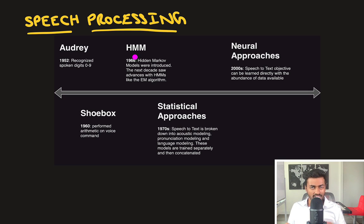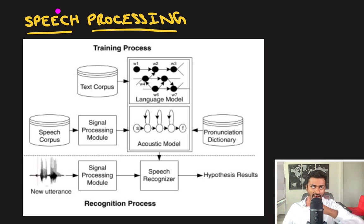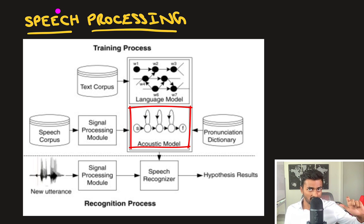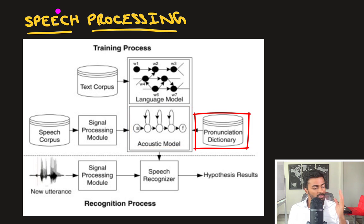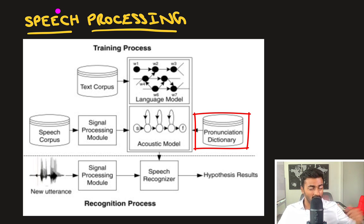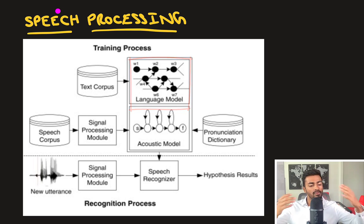For statistical approaches to speech processing, similar to the machine translation case, we would break down the complex problem into three parts: acoustic modeling, pronunciation modeling, and language modeling. Given a raw speech wave, we would first chunk it up. We'd train an acoustic model to generate and recognize different phonemes — this was done with hidden Markov models. Then a pronunciation model would learn the mapping between phonemes and actual words, which could be as simple as a lookup table. Finally, language modeling would take the sequence of words and determine if they make sense in the target language.